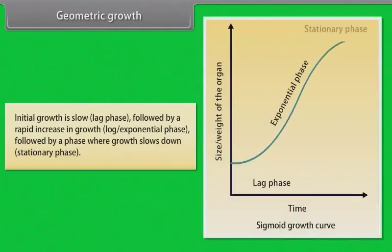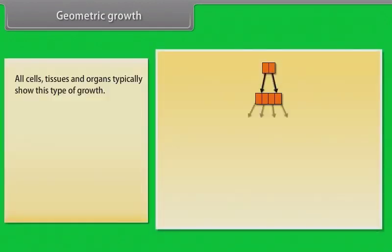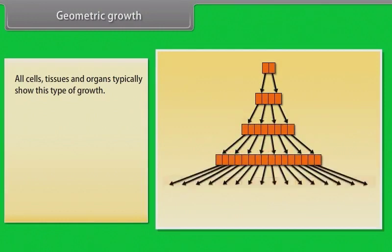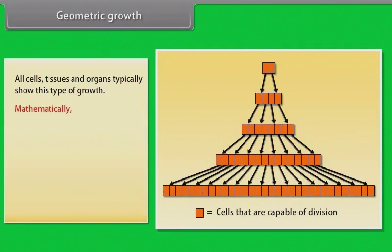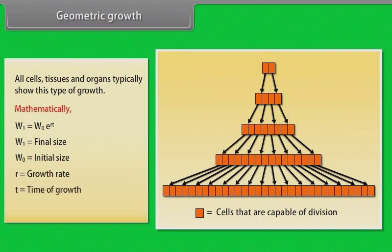Geometric growth: Initial growth is slow, followed by a rapid increase in growth, followed by a phase where growth slows down. All cells, tissues and organs typically show this type of growth. Mathematically, W1 = W0 × e^(Rt), where W1 is final size, W0 is initial size, R is growth rate, T is time of growth, and e is base of natural logarithms.